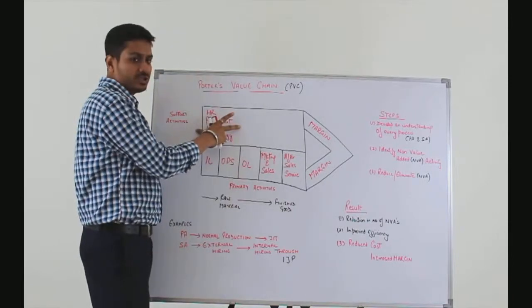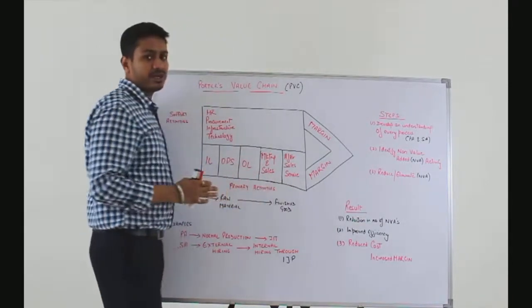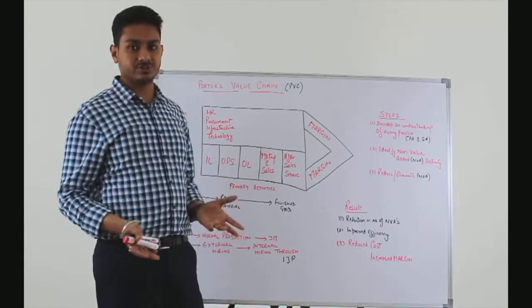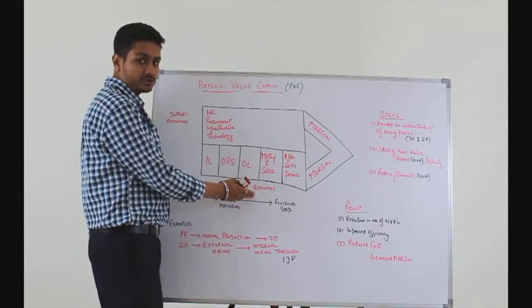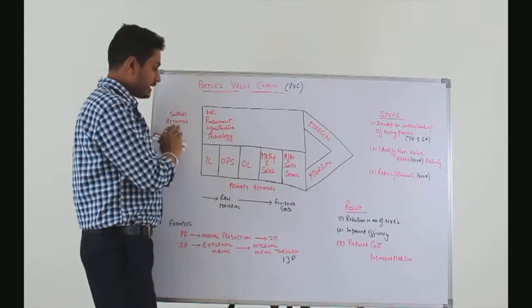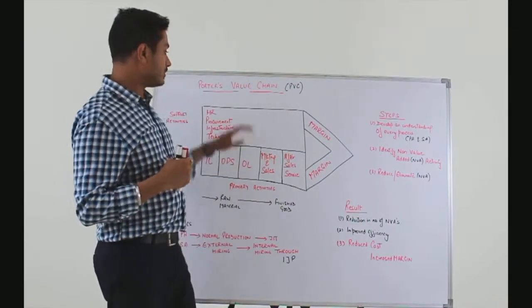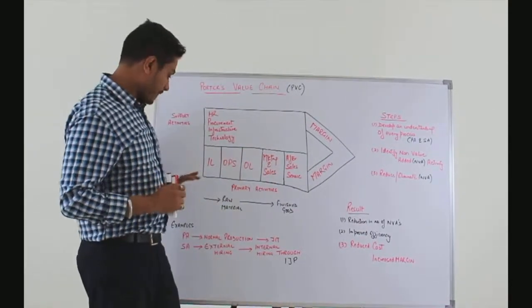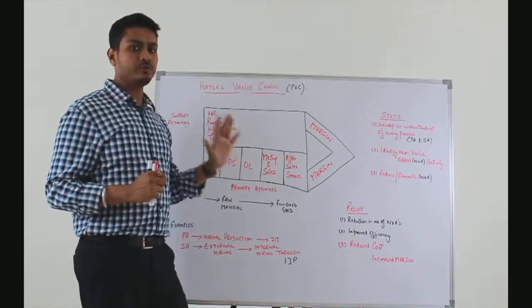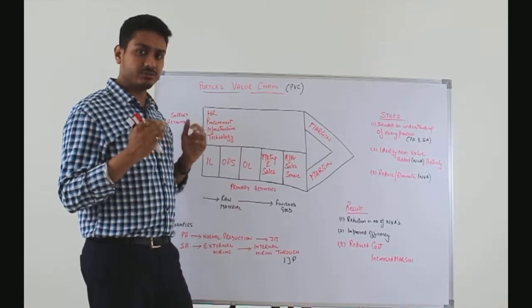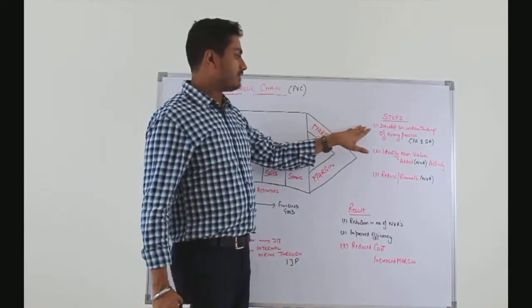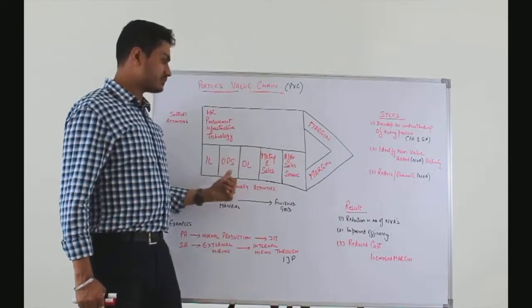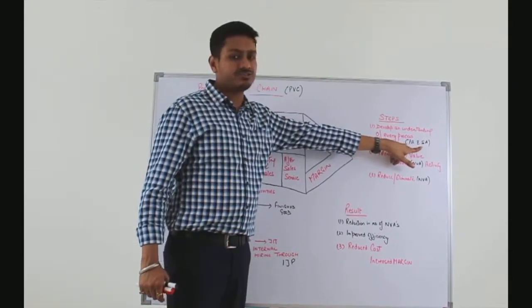These four support activities enable the completion of the primary activities — they are at the backend, while primary activities are at the frontend. Once both primary and supporting activities have been understood, the company can start the actual and practical implementation of Porter's Value Chain. The first step is to develop an understanding of every process — every sub-process within the primary activities and the support activities.